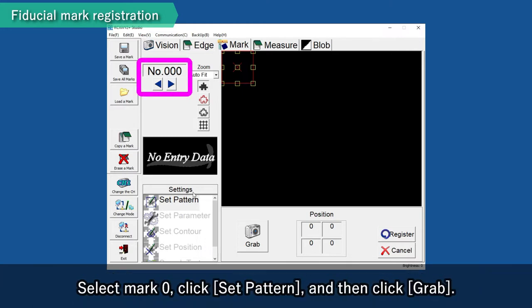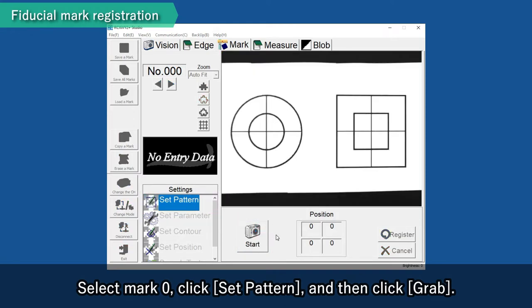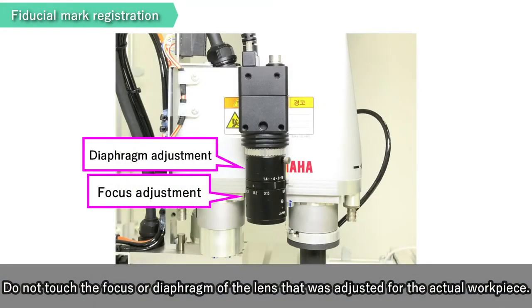Select mark 0, click Set Pattern and then click Grab.